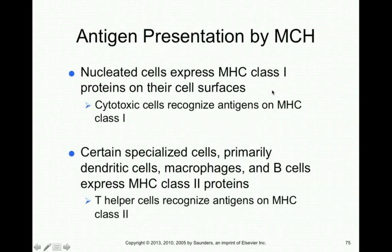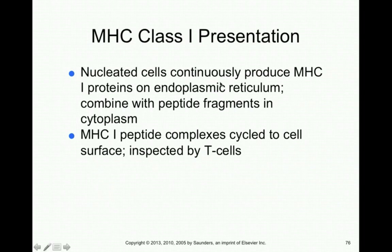All nucleated cells express MHC class 1 receptors on their cell surface, which is important because cytotoxic T cells can recognize antigens on MHC class 1 cells and determine whether those cells are foreign or belong in the body. Specialized cells like dendritic cells, macrophages, and B cells express MHC class 2 proteins. Nucleated cells continuously produce MHC class 1 proteins via the endoplasmic reticulum, and these fuse with other protein fragments in the cytoplasm — using MHC class 1 as a kind of window into what's happening inside cells.